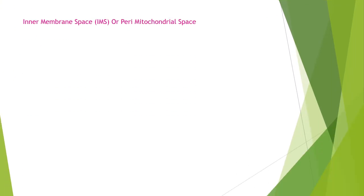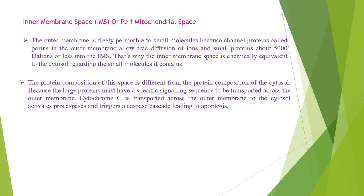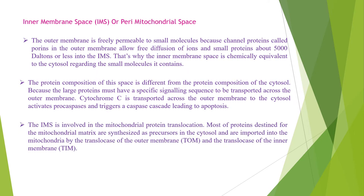Now we will learn about the intermembrane space, or peri-mitochondrial space. The intermembrane space is the space between the inner and outer mitochondrial membranes. The outer membrane is freely permeable to small molecules because channel proteins called porins allow free diffusion of ions and small proteins of about 5000 daltons or less into the IMS. That is why the intermembrane space is chemically equivalent to the cytosol regarding the small molecules it contains. The protein composition of the IMS is different from the cytosol because large proteins must have a specific signaling sequence to be transported across the outer membrane. One protein localized to the intermembrane space in this way is cytochrome C.